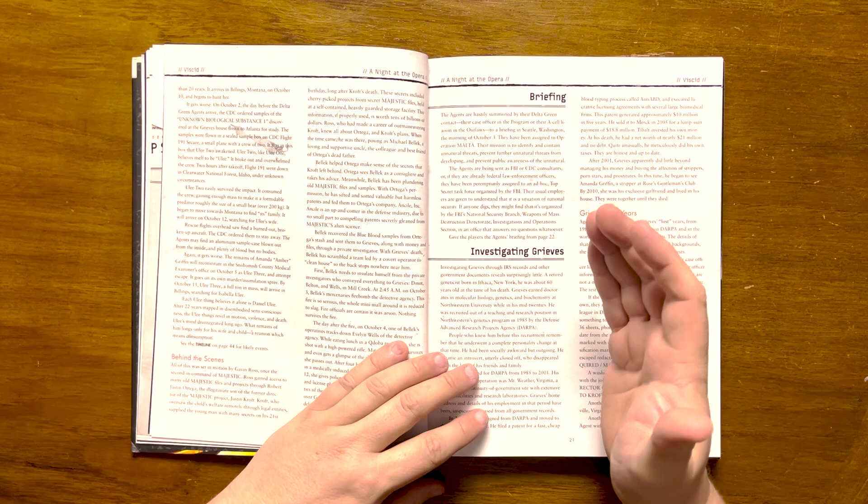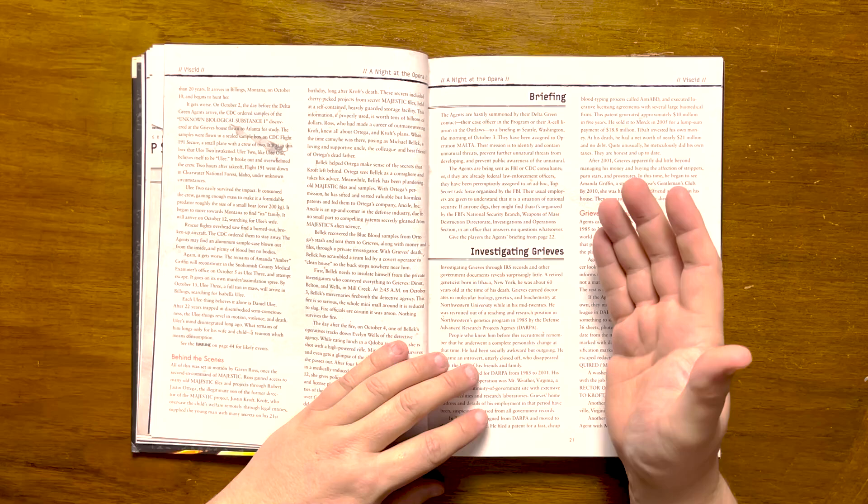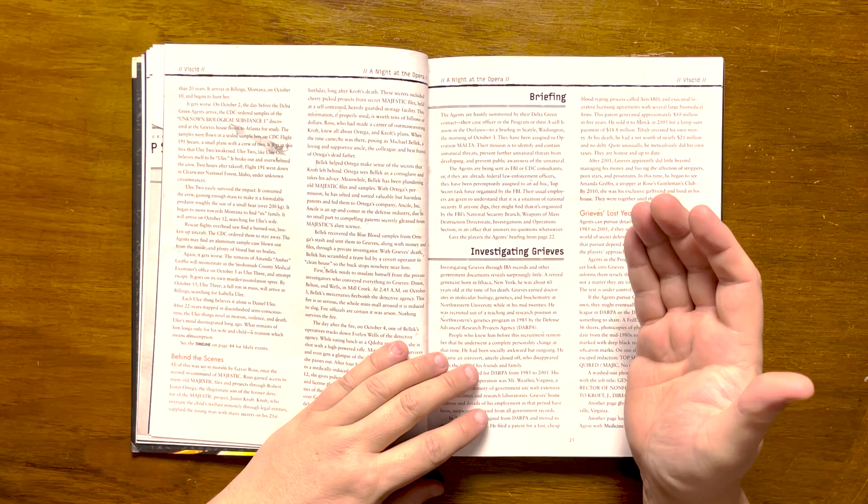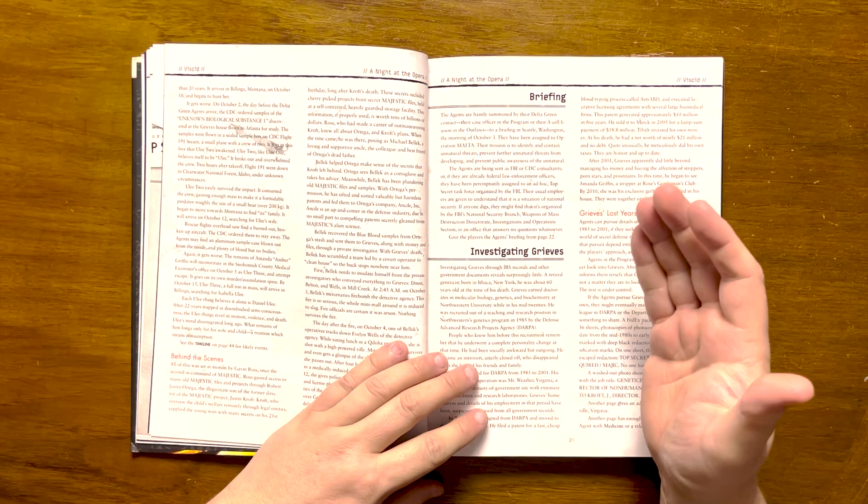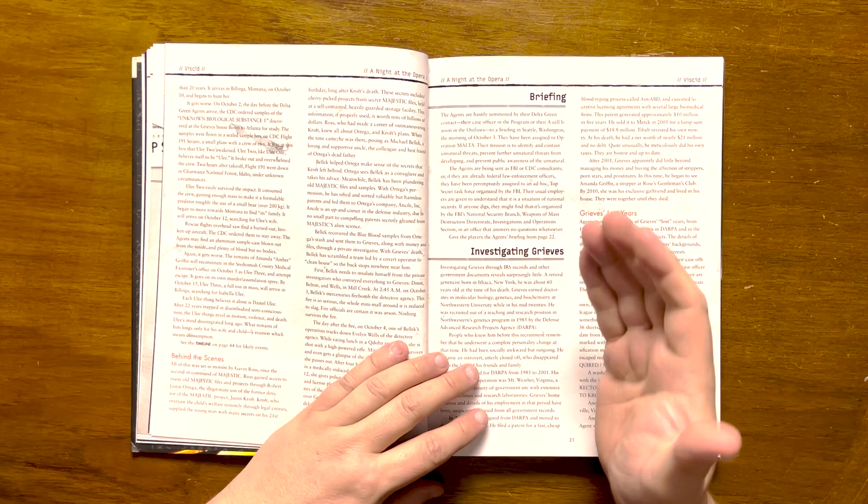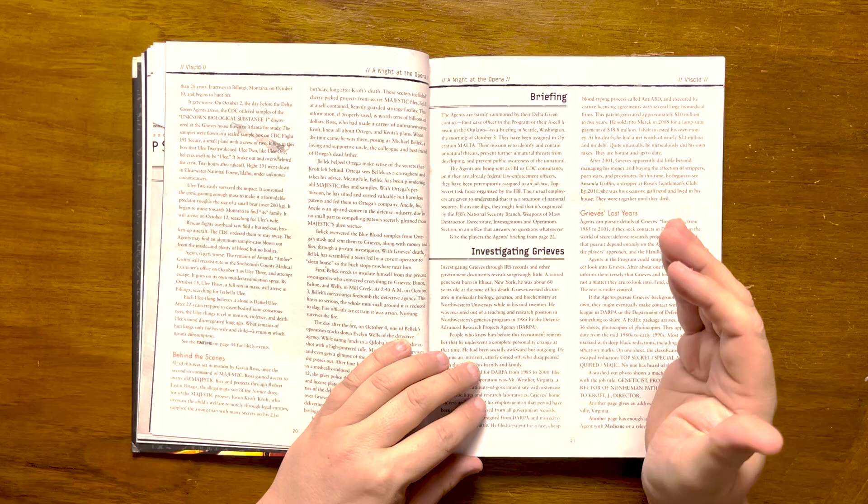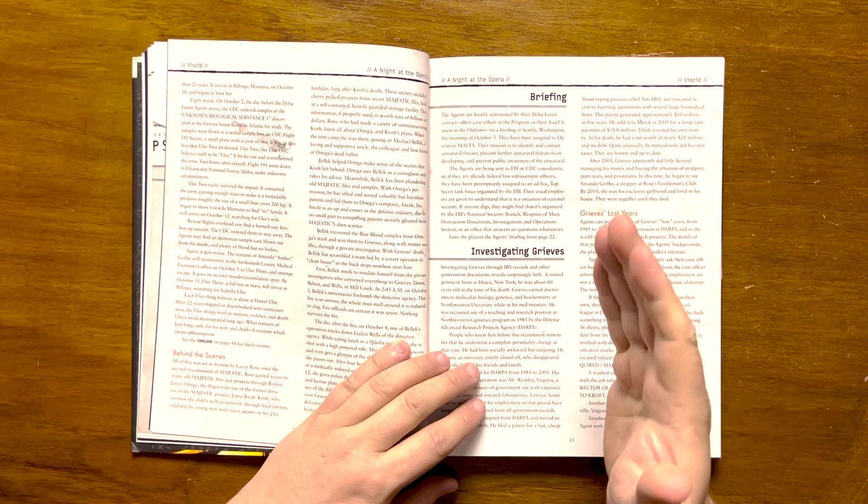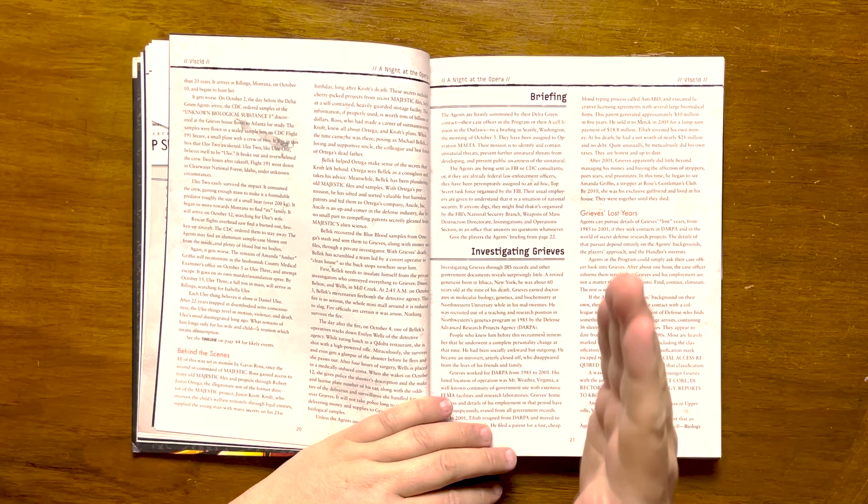Many valuable but harmless patents have been passed through Ortega's company, Anseelink. Bellic recovered the blue blood samples and sent them to Greaves, but upon his death, scrambled a team to clean the house and distance him from any wrongdoings. He ordered his mercenaries to firebomb the agency of a private detective he had hired to convey everything to Greaves. The fire destroyed not only the offices but the mini-mall they were attached to. The following day, Bellic's operatives tracked down the PI, Evelyn Wells, and shot her with a high-powered rifle. Somehow, she survived and is in hospital in a medically induced coma. She will wake up on October 12th and give the police a description of her shooter and the license plate of his car, along with the information on the oddities she delivered to Greaves, that is, unless the agents get involved.